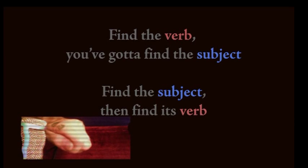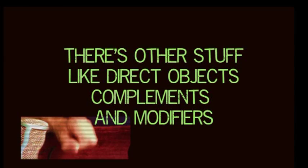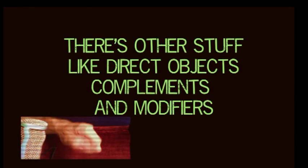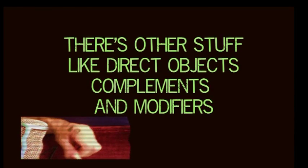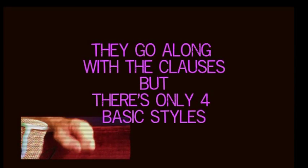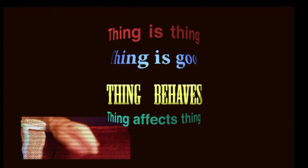You find the verb, you've got to find the subject — find the subject, then find the verb. There's other stuff, like direct objects, complements, and modifiers. They go along with the clauses, but there are only four basic styles: thing is thing, thing is good, thing behaves, thing affects things.